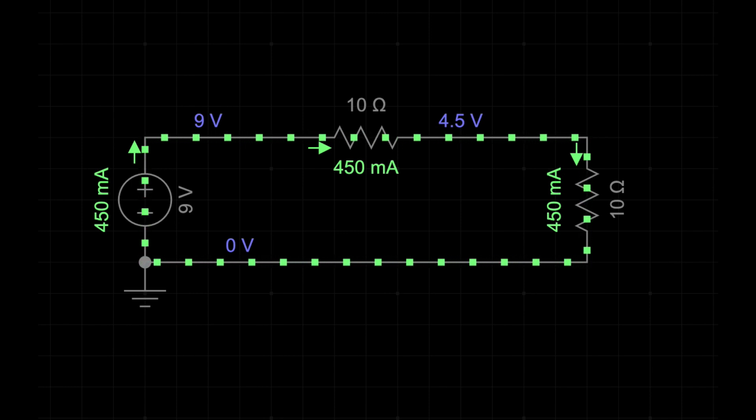A voltage divider is a simple electrical circuit used to reduce the voltage to a desired level. It consists of two resistors connected in series across a power supply. The input voltage is divided between these two resistors.